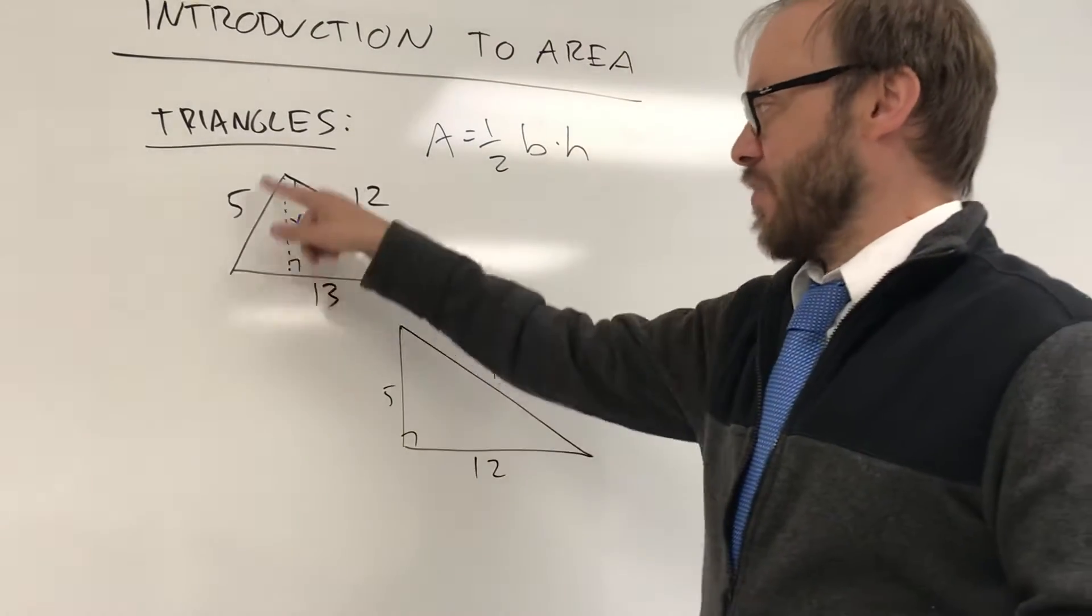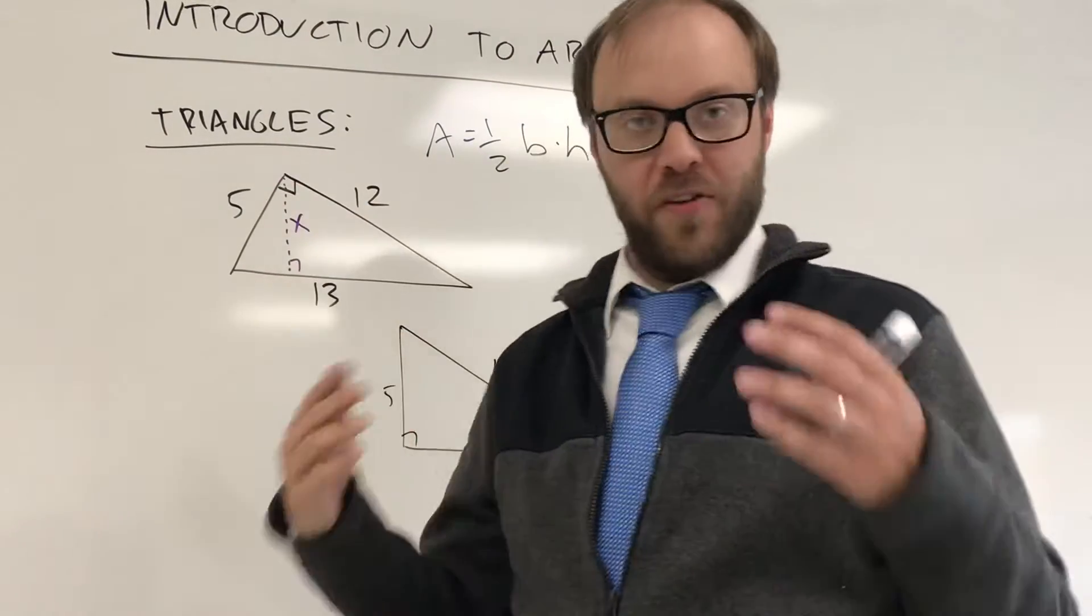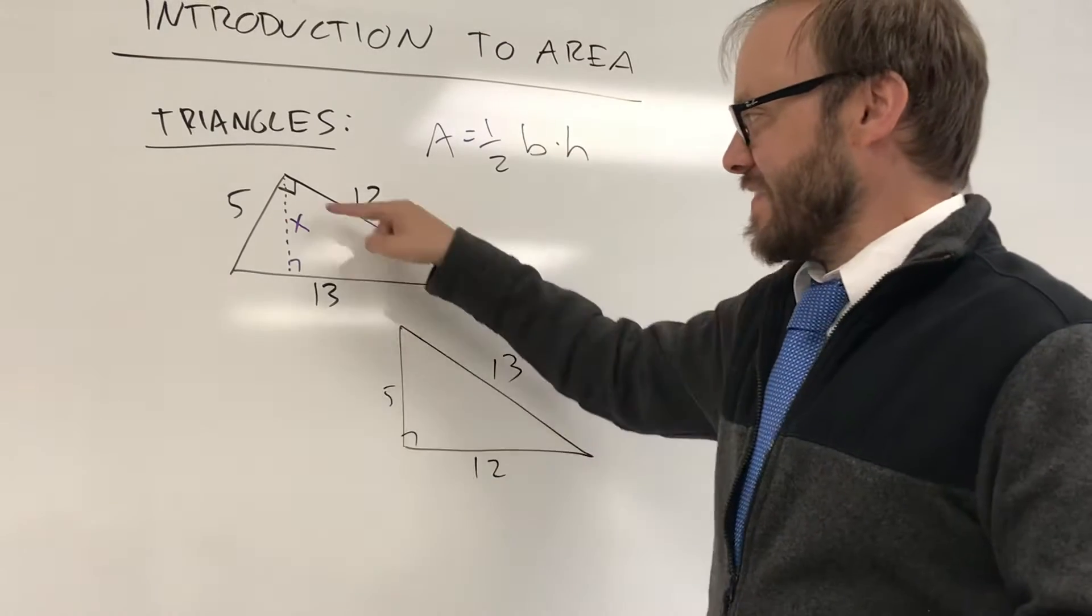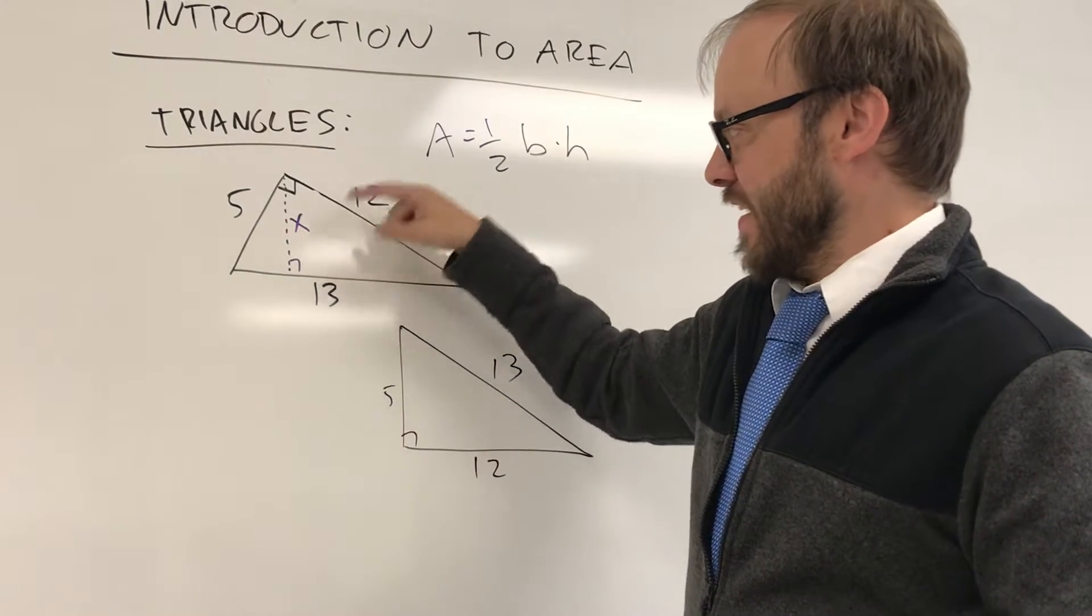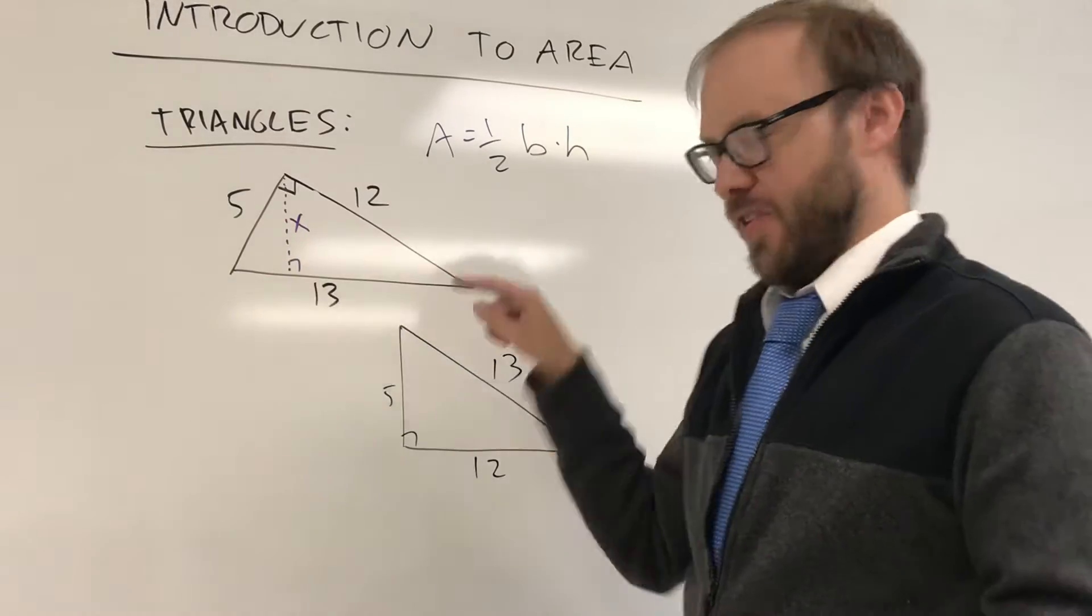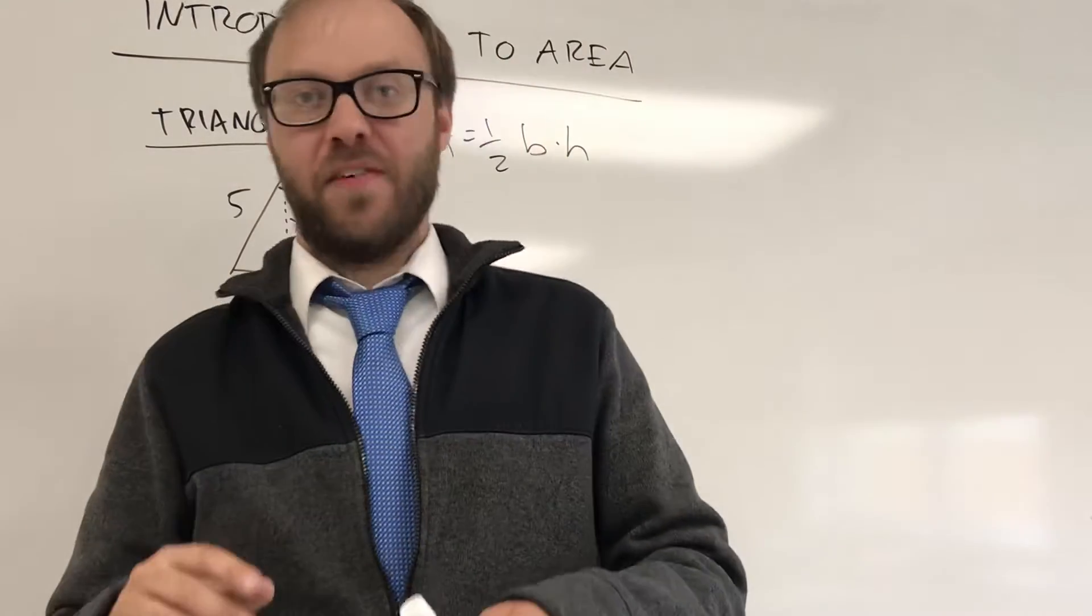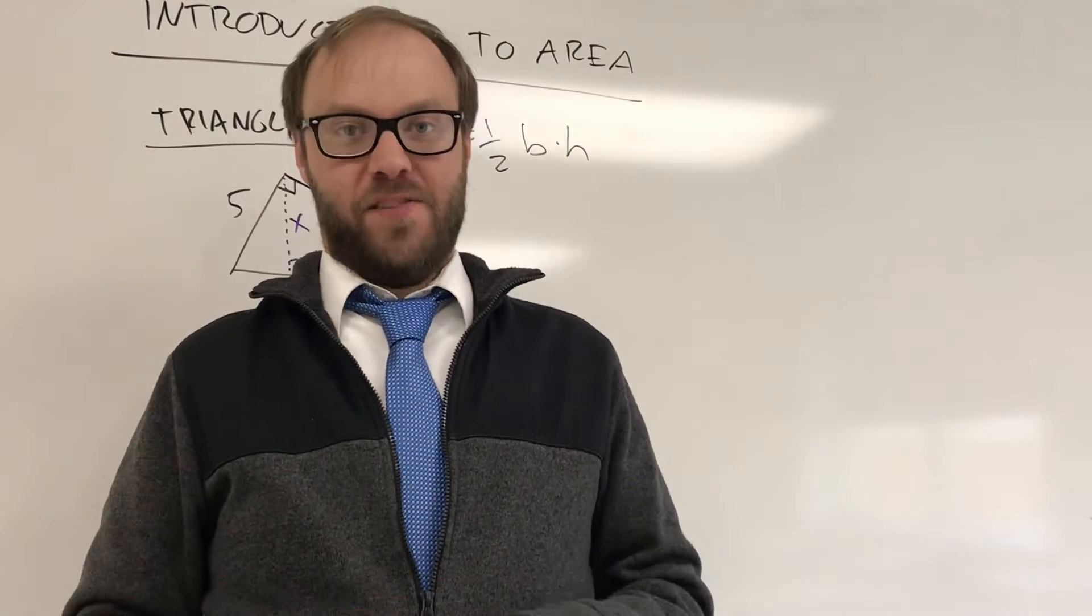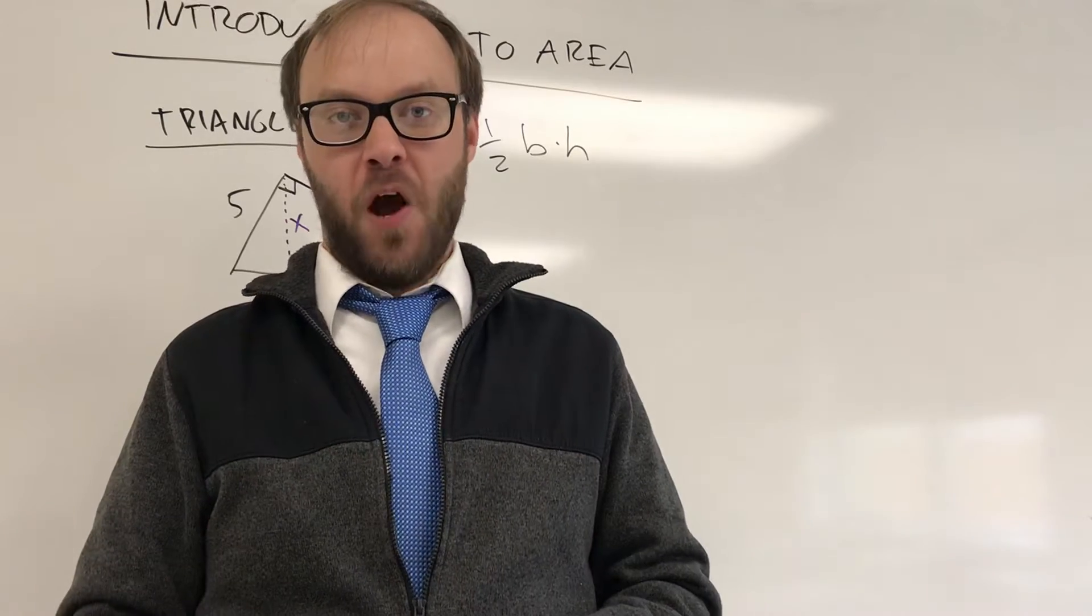Let's say that I had a 5, 12, 13 right triangle. It's a well-known triangle. And let's say that you wanted to find the altitude that is drawn to the base that has a length of 13. And again, this triangle has different altitudes drawn to different bases, but that is one of its altitudes.